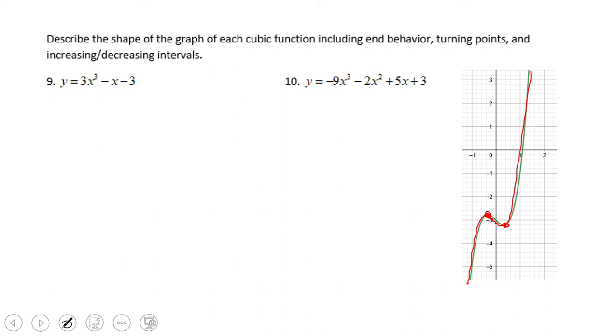Number ten: odd degree, negative leading coefficient. That should tell us it's the other way, right, something like that, or maybe something like this. It's going to be left up, right down.